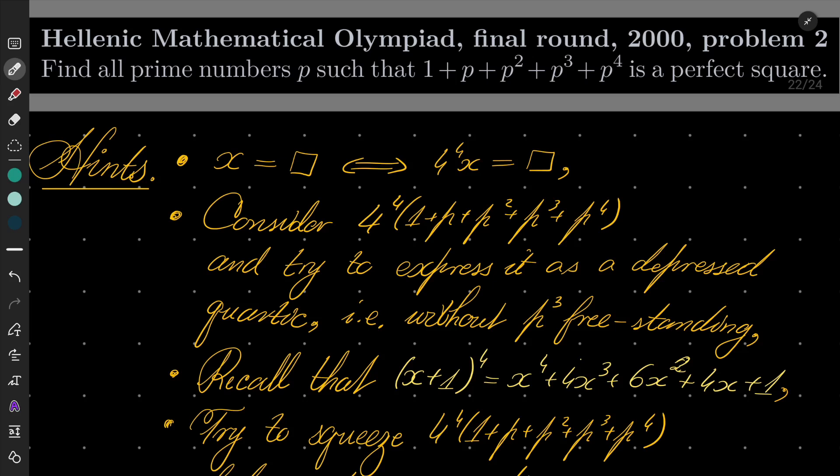We wish to find all prime numbers p such that 1 plus p plus p squared plus p cubed plus p to the 4th power is a perfect square.